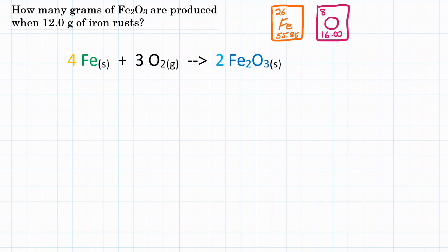Alright everyone, how many grams of Fe2O3 are produced when 12.0 grams of iron rusts? So this is a mass-to-mass stoichiometry problem.